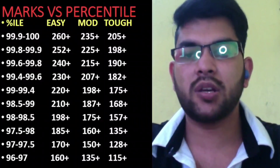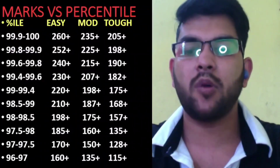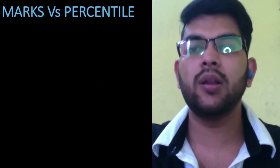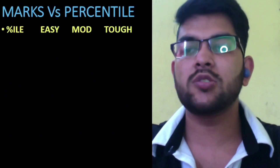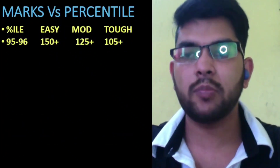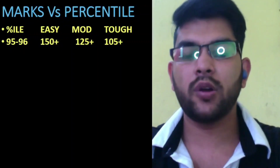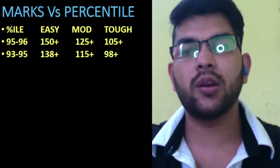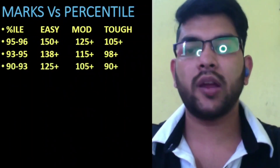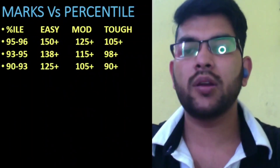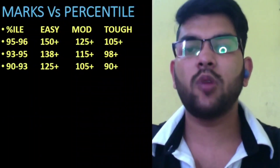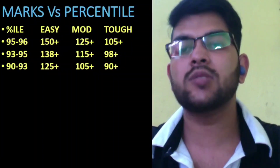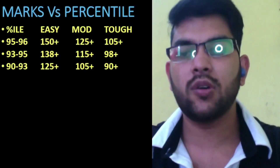You can contact me anytime through Instagram or WhatsApp number available in the description box. Here is some more marks versus percentile data. For 95 plus percentile, your score should be 125 or more. For 93 plus percentile, your marks should be 115 or more. For 90 plus percentile, your marks should be 105 plus — that is for moderate paper. For easy paper you need to score more marks; for tough paper you need to score less marks.